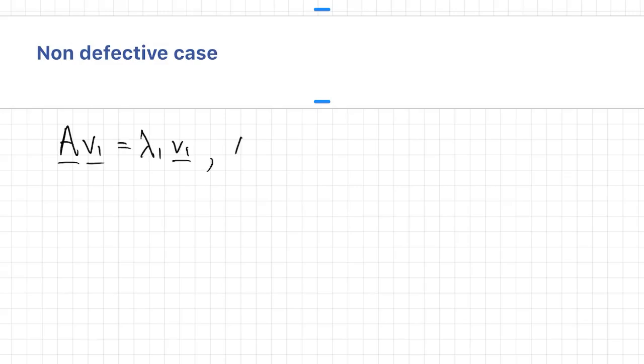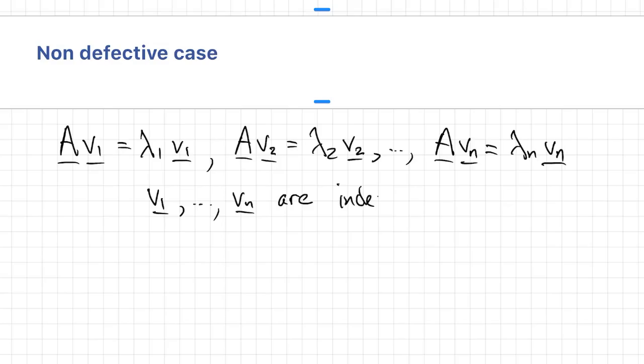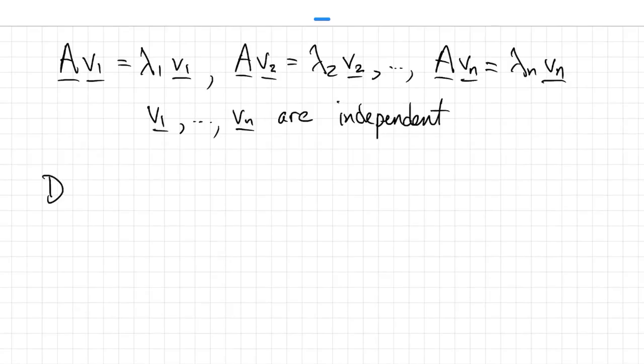So A will be an n by n matrix with n eigenvalues and n independent eigenvectors. We'll define a matrix V whose columns are the eigenvectors. That's an n by n matrix. It must be an invertible matrix.